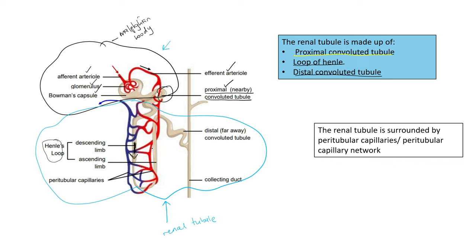The loop of Henle consists of a descending limb and an ascending limb — this U-shaped part is the loop of Henle. The distal convoluted tubule is at the far end, away from the Malpighian body. 'Proximal' means closer to the Malpighian body; 'distal' means far away from it. Together these form the whole section of the renal tubule.